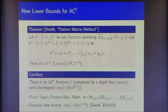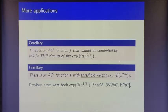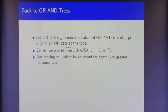We also get immediate corollaries: a function in AC0 that is not computed by majority of threshold circuits of size 2^{n^{2/5}}, and new threshold weight lower bounds for AC0. I also have time to cover the final result: back to OR trees of higher depth.